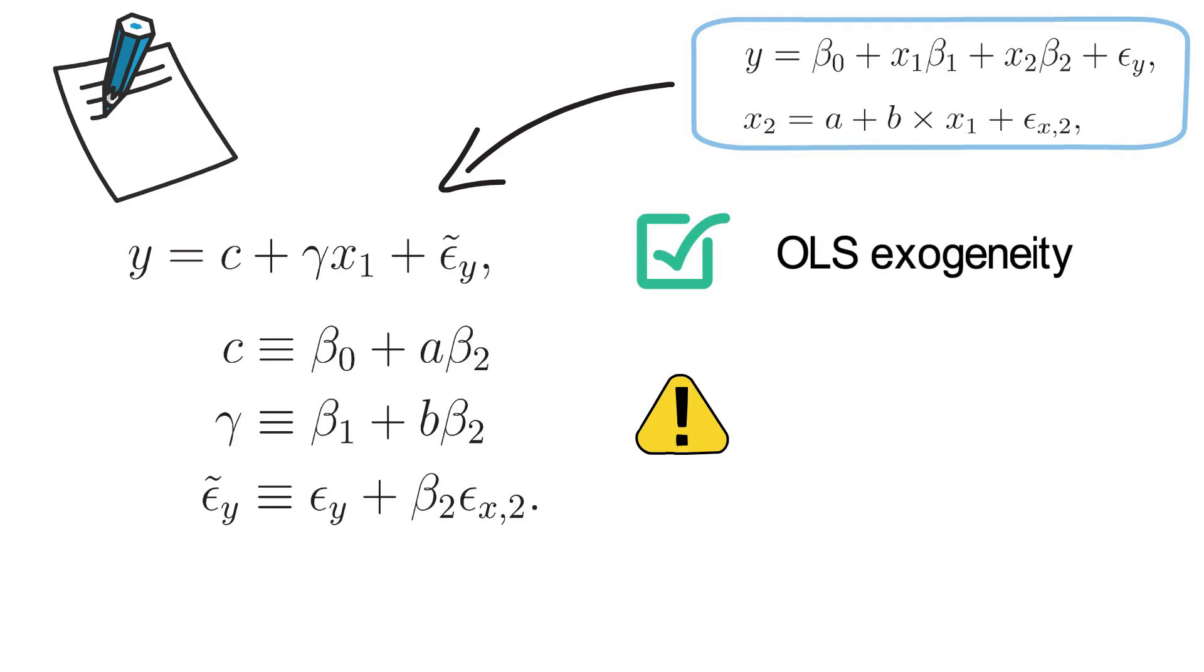In fact, gamma will be larger than beta 1 for b times beta 2 being larger than 0, and gamma will be smaller than beta 1 for b times beta 2 being smaller than 0.